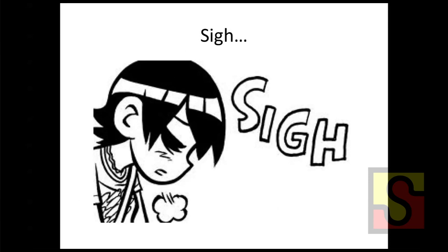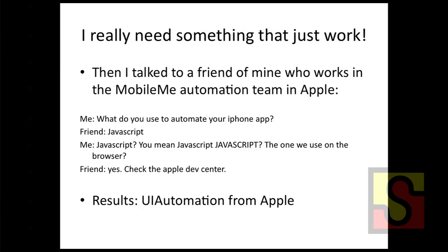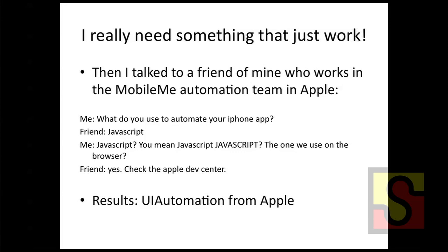I really needed something that just works. So I talked to a friend of mine who works at Apple on the MobileMe team. The conversation went like this: how do you automate your software, native apps on iPhone or iPad? They use JavaScript — really, JavaScript? That one that runs in the browser? The conclusion was: look at UI Automation from Apple. They have this framework already in Instruments. There's a guy called Alex Roma who has an excellent blog about how to set it up.